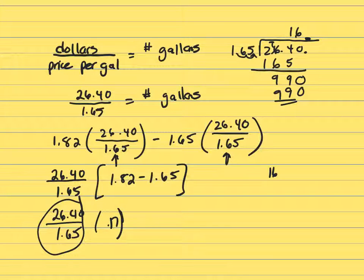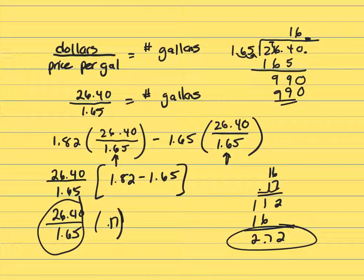So I've got 16 times 0.17. 7 times 6 is 42, that's going to be 11. That's going to be a 16, that's going to be a 2, a 7, a 2, and I'm going to move my decimals over two places. Spent $2.72 more this week, and I think that's the fastest way to work it.